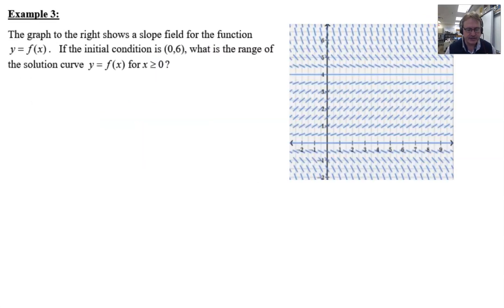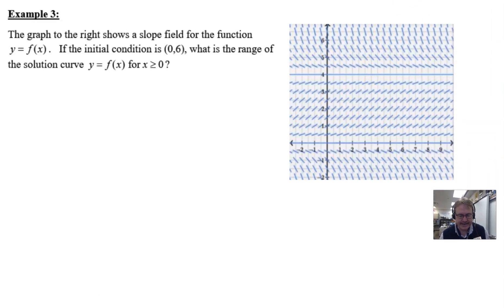This one's again just a little different. Let's read the question together. The graph to the right shows a slope field for the function y = f(x). Boy does it show a slope field! I wouldn't like to put this one together, that would take a long time wouldn't it? If the initial condition is (0, 6), what is the range of the solution curve y = f(x) for x ≥ 0?